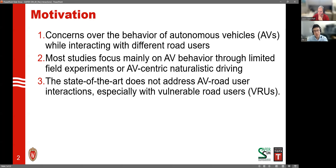Currently, most existing studies mainly focus on AV behavior through limited field experiments or AV-centric naturalistic driving. This means they do experiments in closed tracks or simulations. We would like to have experiments conducted on open roads to test the ability of AVs while interacting with different road users. In addition, current studies do not address AV interactions with vulnerable road users, which include pedestrians and bicyclists, who are often at risk while involved in crashes and other incidents on the road.